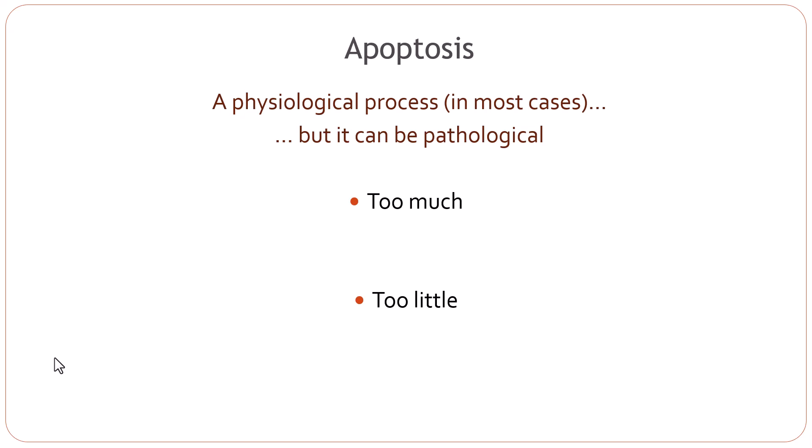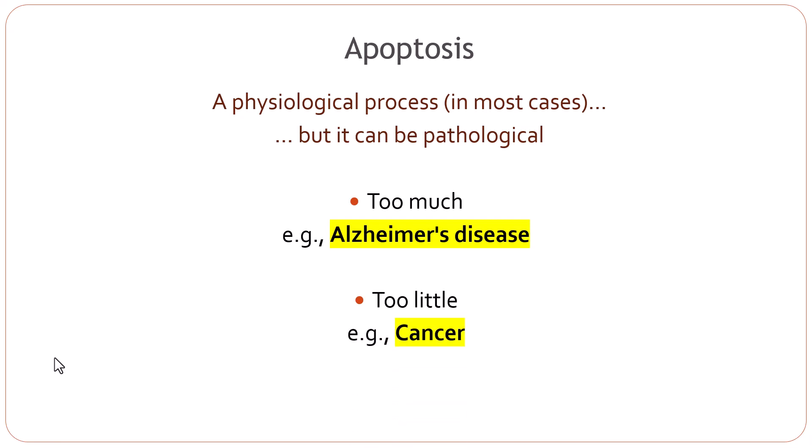If there is too much apoptosis, what would happen? For example, in Alzheimer's disease, you lose neurons. What if there is too little apoptosis? The example is cancer — cells do not die and they keep on growing, even though they are acquiring errors in their DNA.